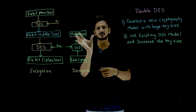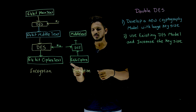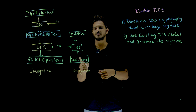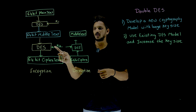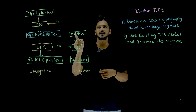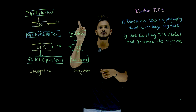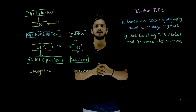The same process, exactly in reverse, happens in decryption. The 64-bit ciphertext first goes into the first DES where K2 is taken, producing the middle text, and then the next DES gives you back the plain text.